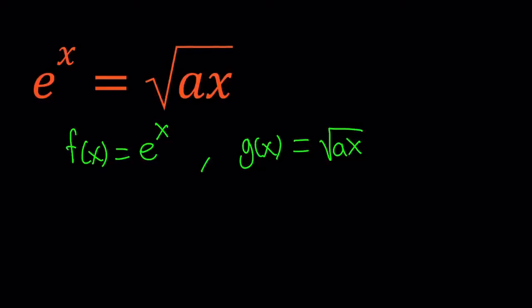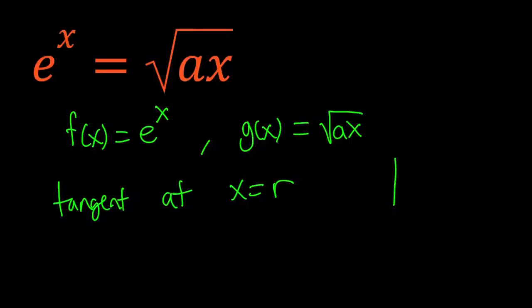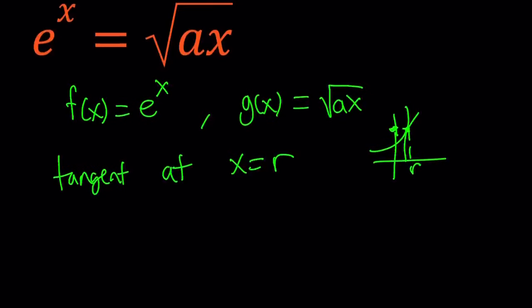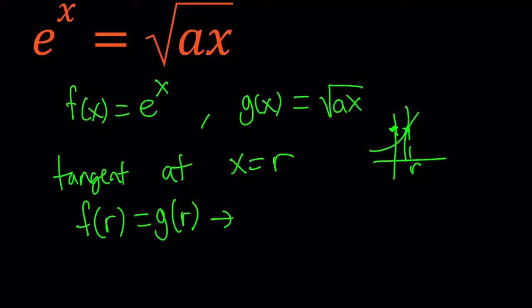Let's start with that. If these two curves are tangent at x equals r, then this implies the following. If two curves are tangent, they're going to take the same y value at that point. So f of r is going to be the same as g of r. If you replace x with r, you get e to the power r on one side and square root of ar on the other. So we get one equation, but there are two variables, a and r, so we do need another equation.